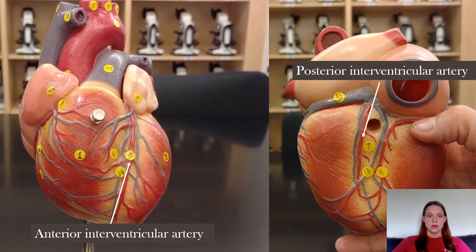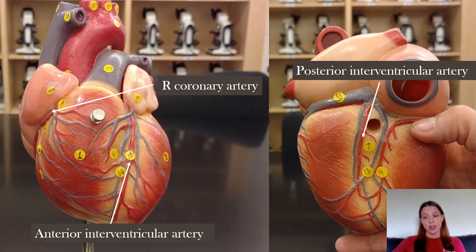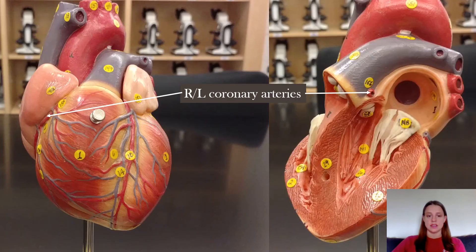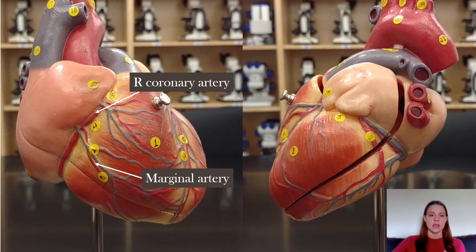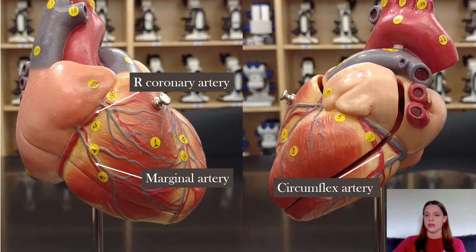Under the auricles in the coronary sulcus we have the right coronary artery and the left coronary artery, although on this model the left coronary artery is hiding underneath the left auricle — you can see it here as a little nub. Coming off of the right coronary artery is the marginal artery. The word margin means border, so the marginal artery is on the border of your heart. Off of the left coronary artery is the circumflex artery.